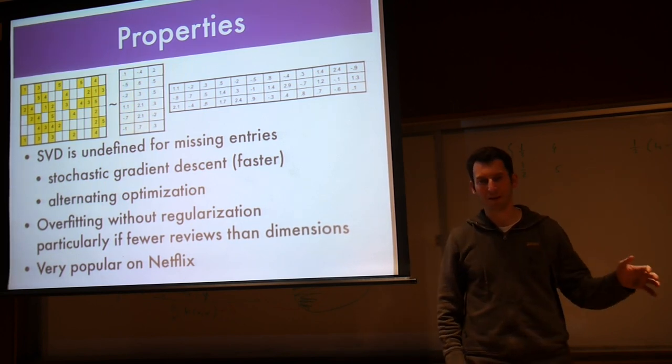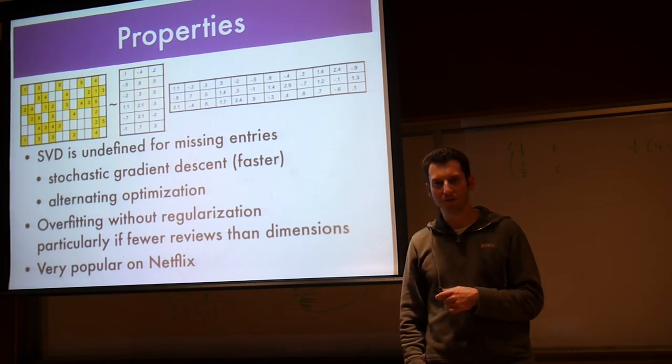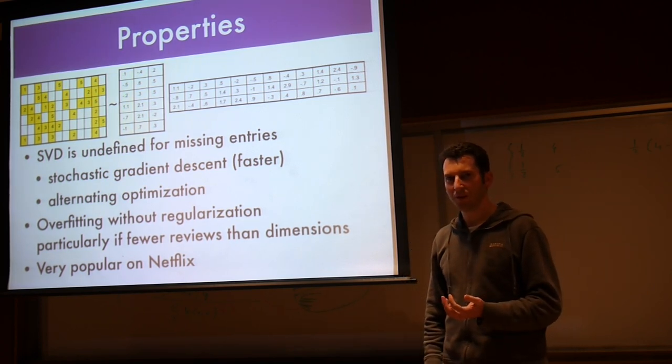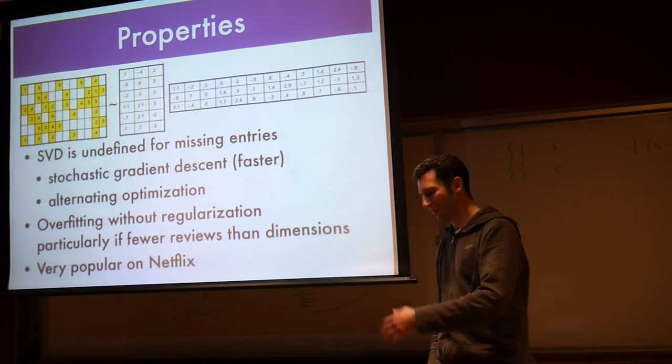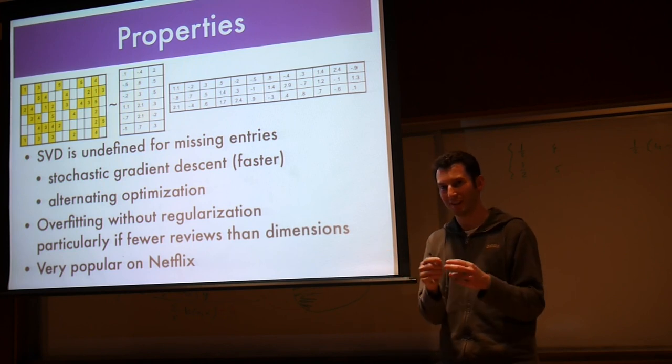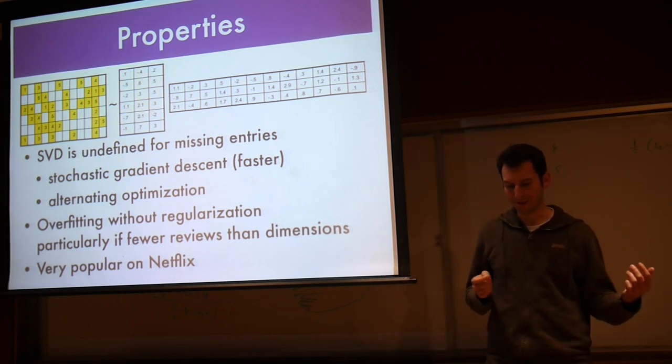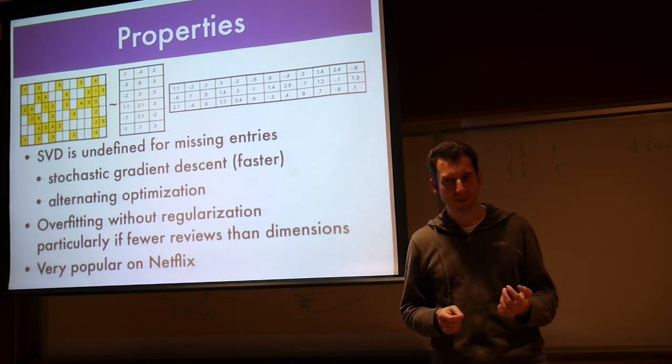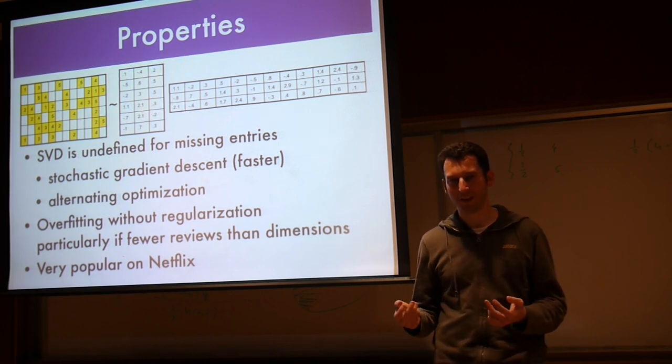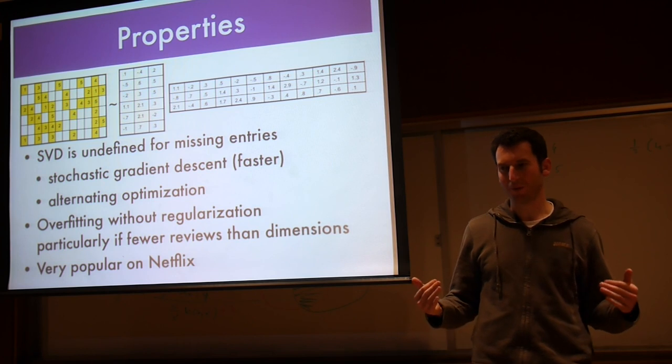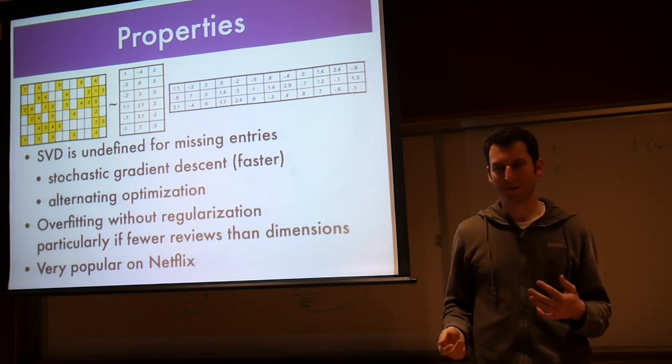The problem is that this actually overfits like crazy if you don't regularize, especially if you have items that have only very few reviews or users who don't review much. Why would that happen? Well, suppose I have a 10-dimensional model and the user only reviewed three things. In this case, it's very easy to get those three things right. Unless the three things that you reviewed are exactly all lined up, which is very unlikely to happen, I can overfit with the remaining parameters.